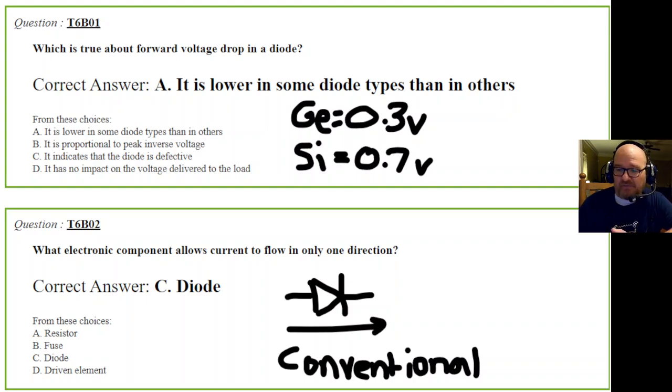Out of those four choices: resistors let current flow in any direction, a fuse - any direction, a driven element of an antenna - any direction. But a diode - one direction only.